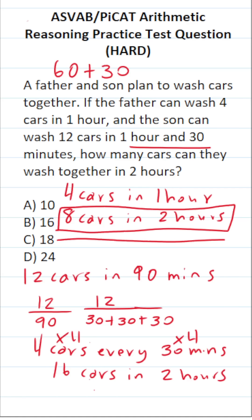So to answer this question, how many cars can they wash together? The father can wash eight cars in two hours, and the son can wash 16 cars in two hours. 16 plus eight is 24. So together they can wash 24 cars in two hours. So this one is D.